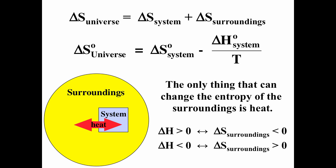We're able to write the change in entropy of the universe in terms of the change in entropy of the system and the change in enthalpy of the system. If delta H is positive, that means Q is positive — heat is going from the surroundings to the system — so delta S of the surroundings would be negative. If delta H is negative, that means Q is negative and heat is going from the system to the surroundings, so delta S of the surroundings would be positive.